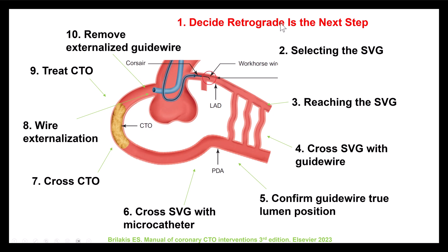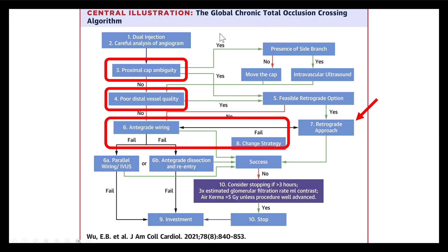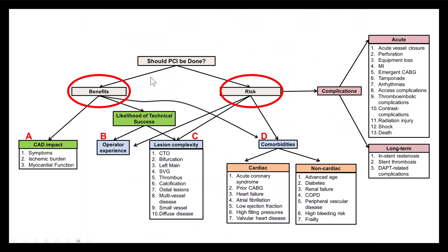Step number one is to decide to go retrograde. Based on the global CTO crossing algorithm, we go retrograde if there is ambiguity of the proximal cap, poor distal vessel quality, or when antegrade attempts fail. That requires that we have acceptable risks and options for the retrograde approach. Going retrograde through SVGs has intermediate risks compared with the septals and the epicardial collaterals, so the benefits should be more than the potential risks.